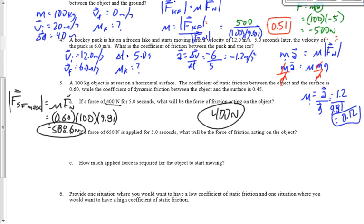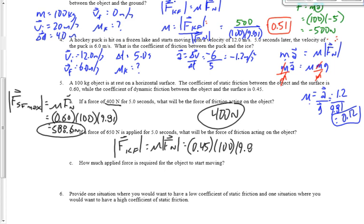A force of 650 Newtons is applied for 5 seconds — what will the force of friction be? Does it move? Yes it does, so now we find the force of kinetic friction: FKF equals μk times the normal force, using the kinetic friction coefficient of 0.45 times 100 times 9.81, which works out to 4.4 × 10² or 440 Newtons. Since it's moving, the kinetic friction force is 440 Newtons.